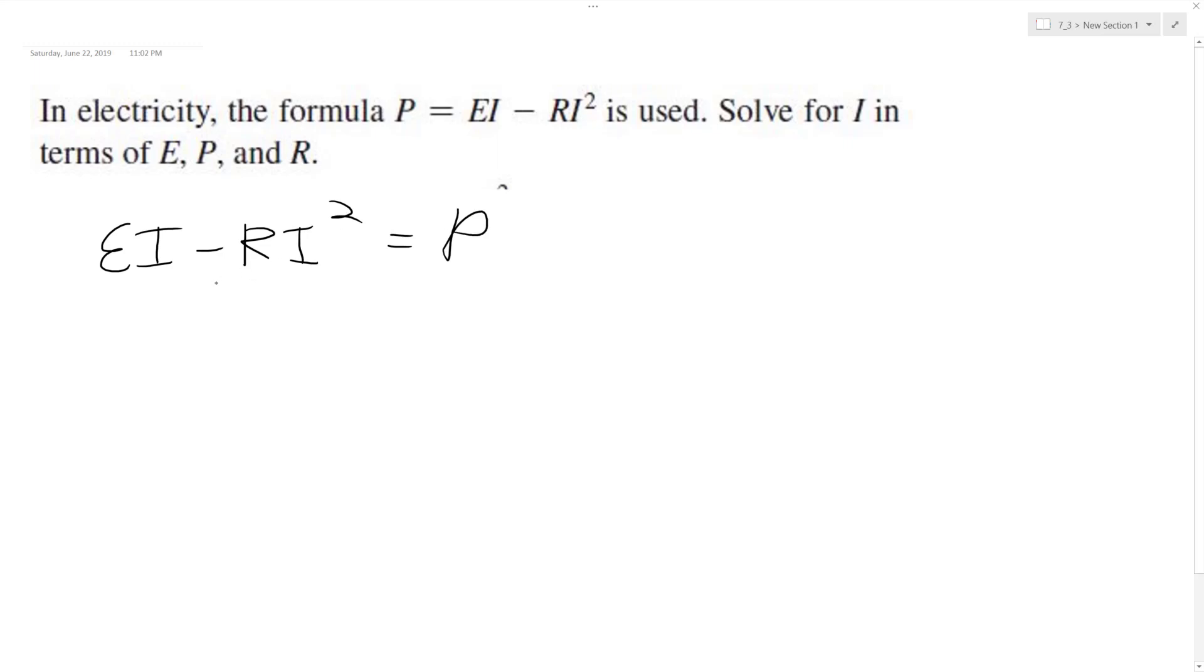So what we can do here for I is we can factor out the I. Actually, no, we can't. So I'm going to rewrite this as negative RI squared plus EI, and then I'm going to put the P over minus P equals 0.